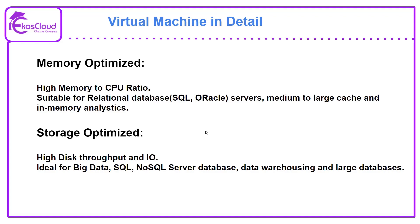For memory optimized, we will have a high memory to CPU ratio. Certain applications will require more memory, like frequently accessing the web server where cache is stored in memory. In order to have speedy access to the web server, we choose the option for high memory to CPU ratio.